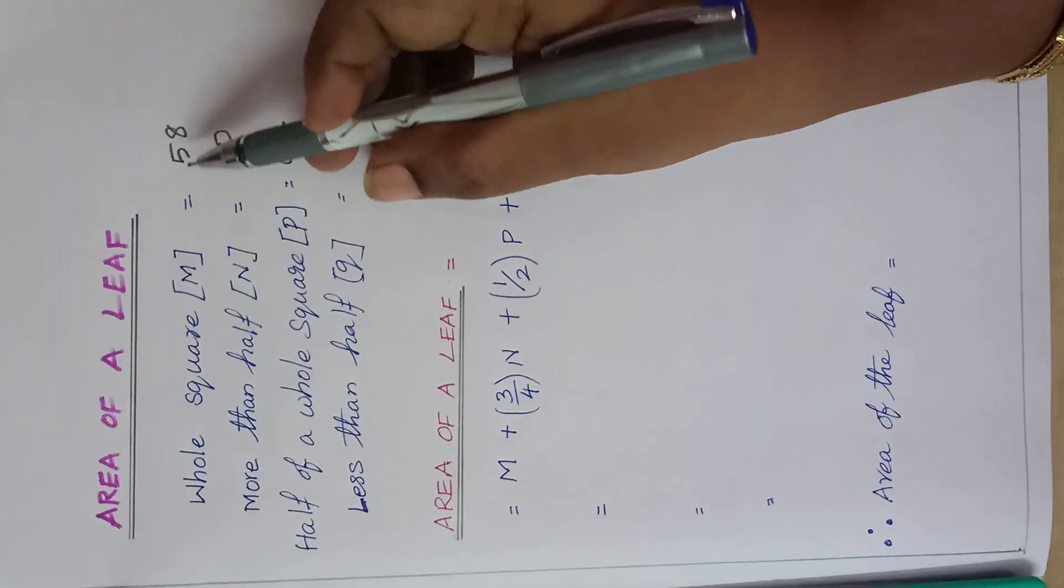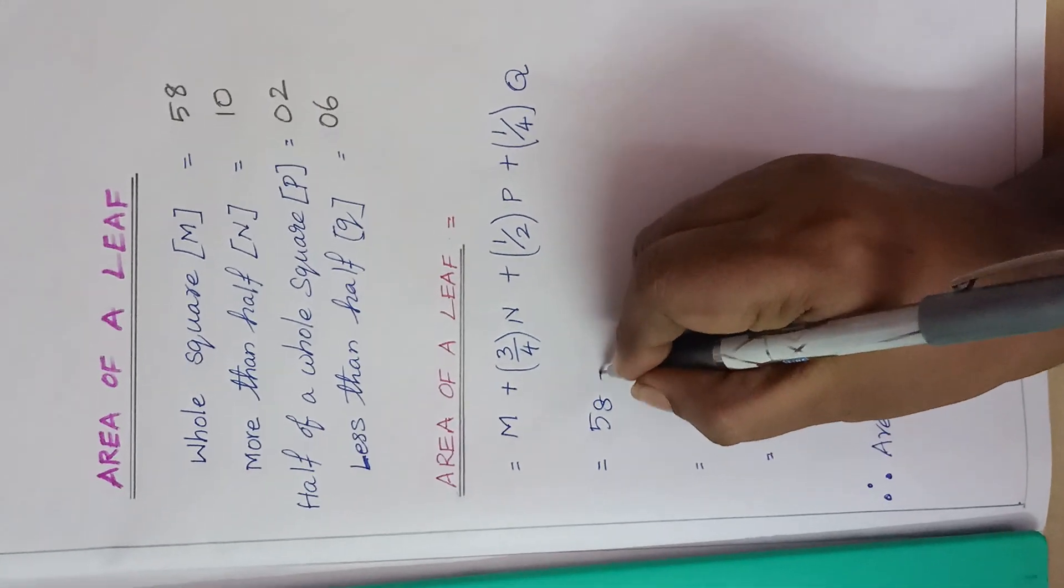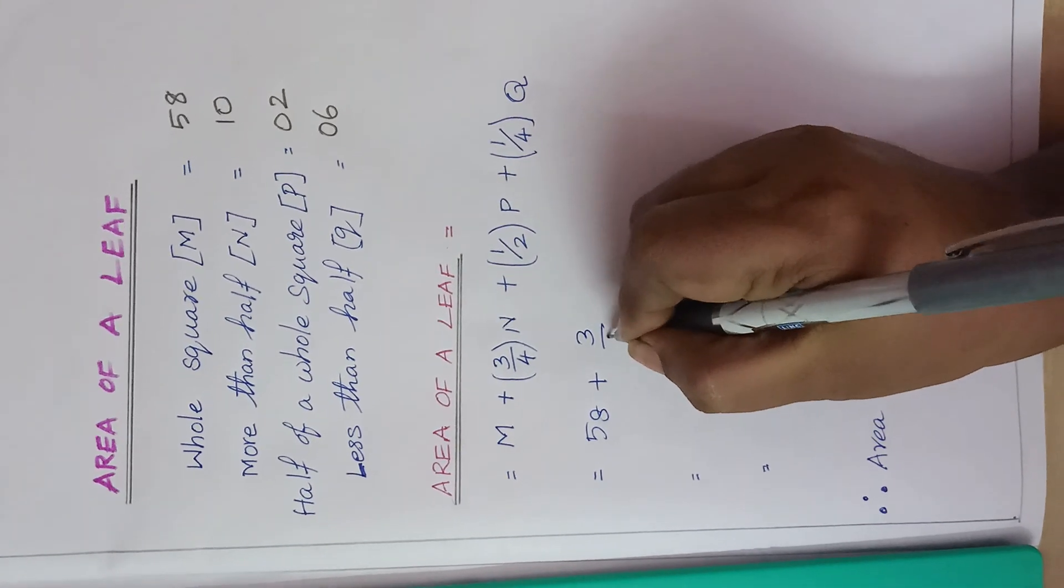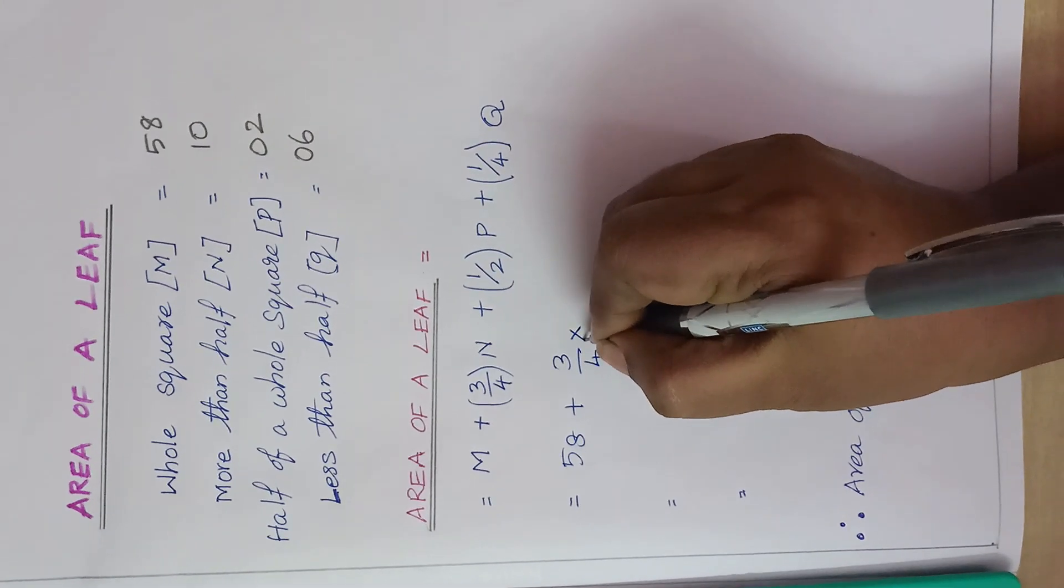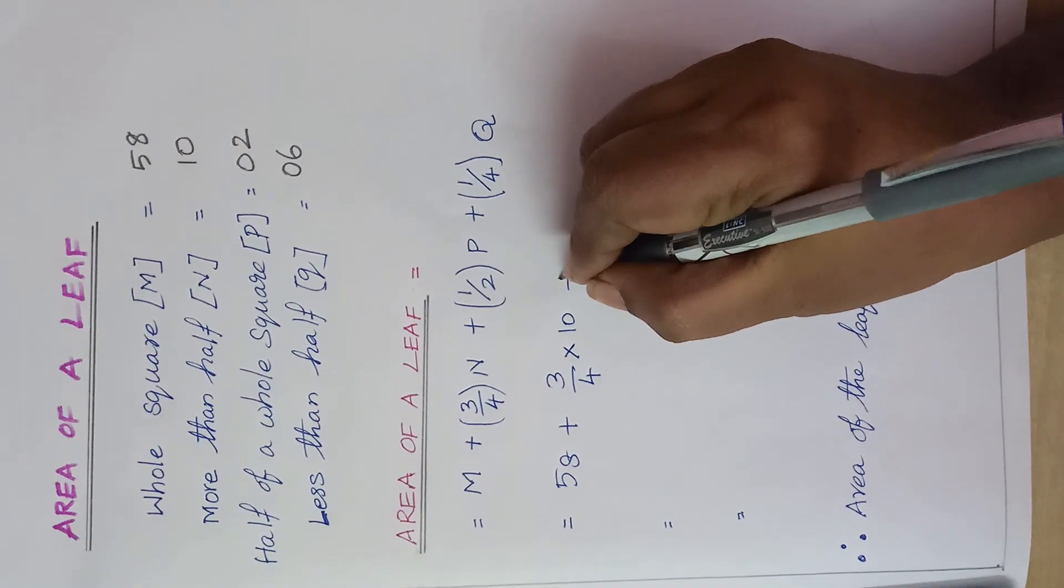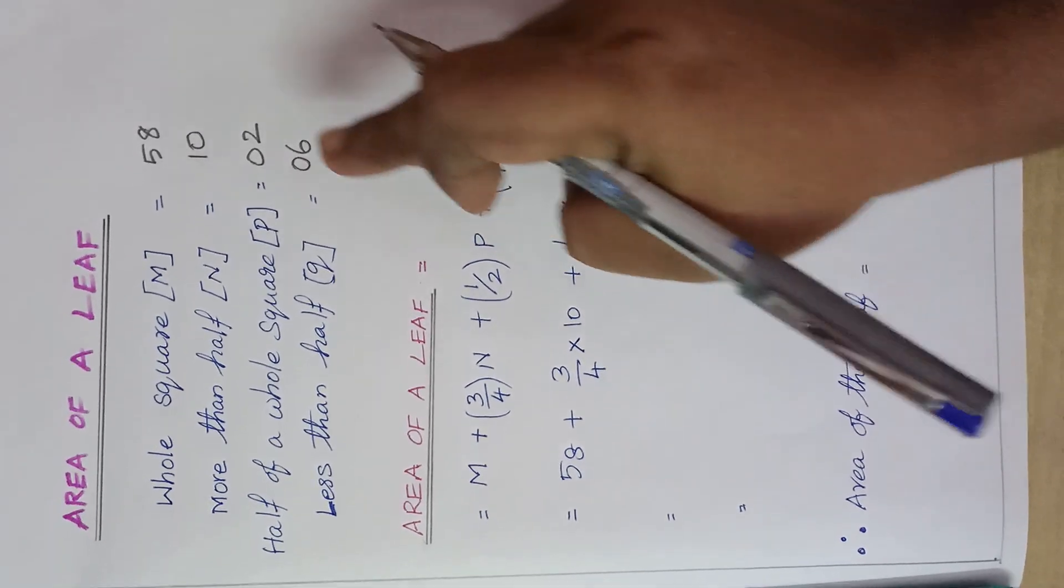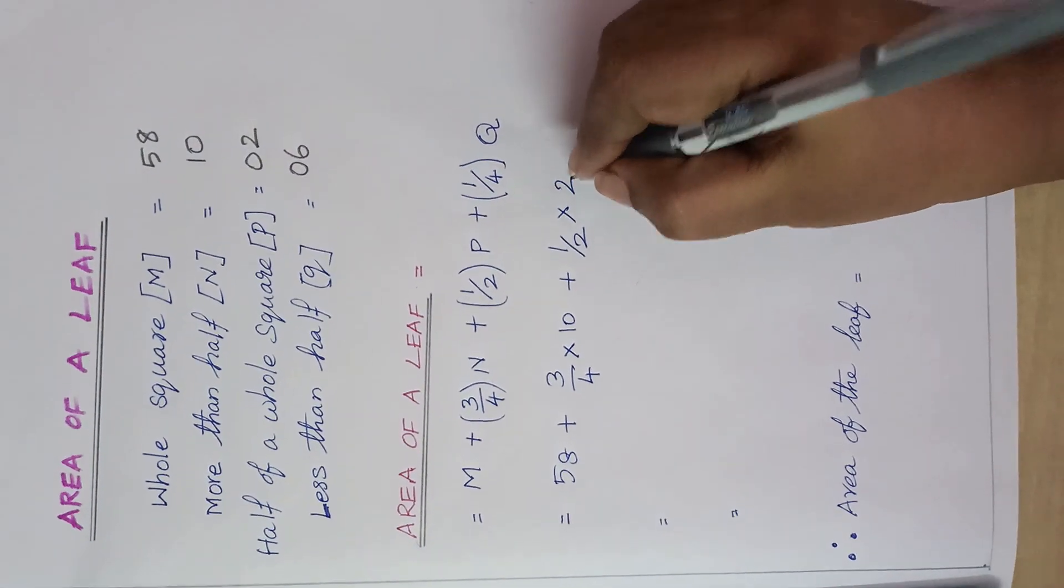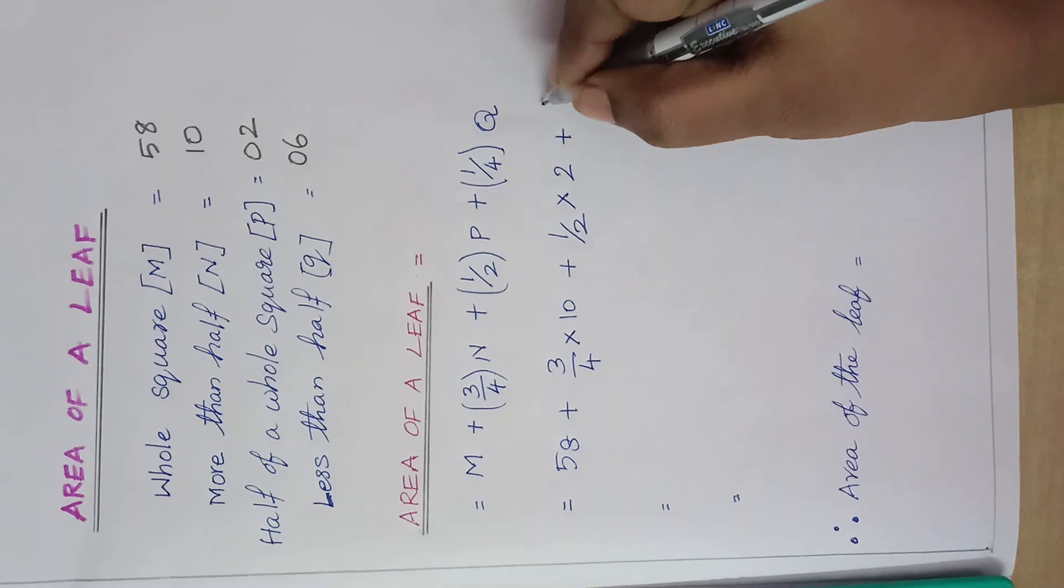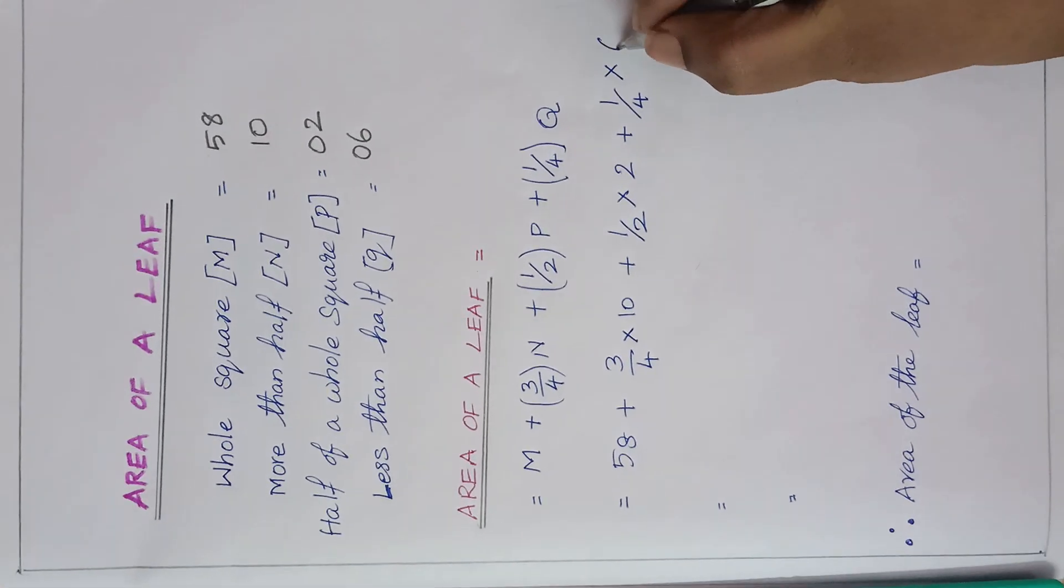Now, M is equal to 58. So, 58 plus 3 by 4 into how many N? 10. The value is 7.5 plus 1 by 2 into how many P's? 2. Plus 1 by 4 into 6 Q's.